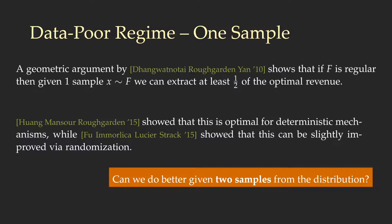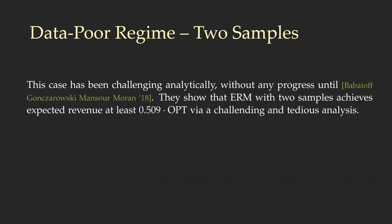The question we are trying to answer in this work is: can we do better given two samples from the distribution? This question has proven very challenging, and only very recently it has been shown that the empirical revenue maximization mechanism with two samples achieves at least 0.509 times the optimum, which proves a separation between the case of one sample and two samples.